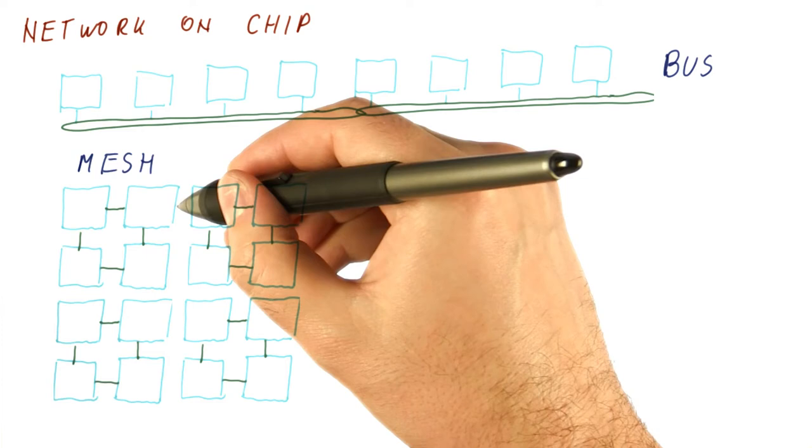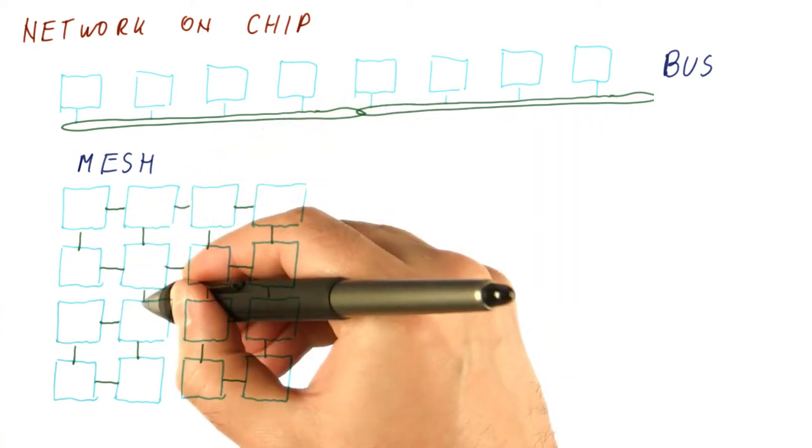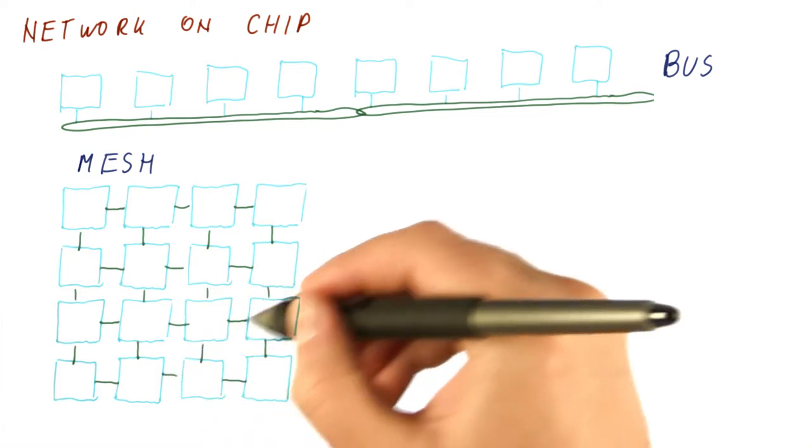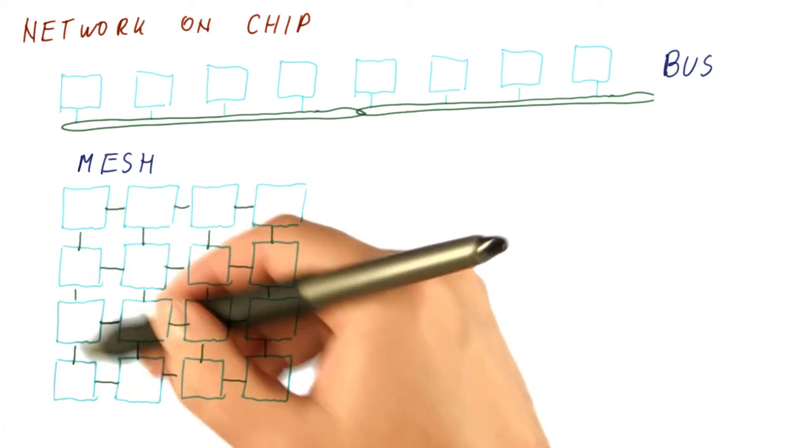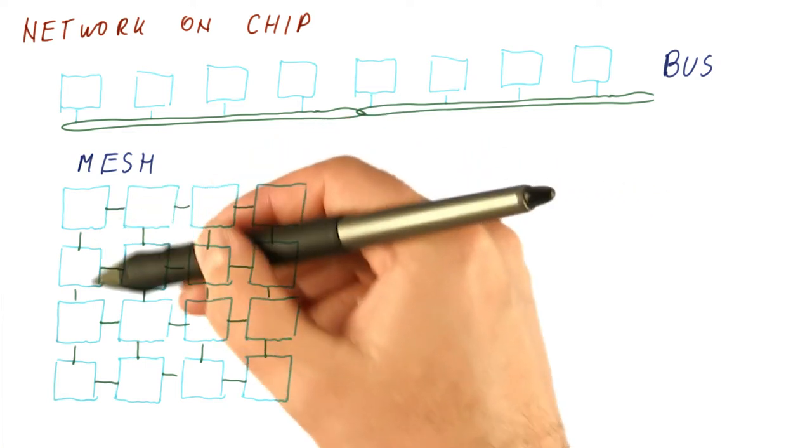Now I'm going to take this two by two mesh and copy it so that I get four of those. And create a four by four mesh that now supports 16 cores, twice as many as here. Note how many new links are there.